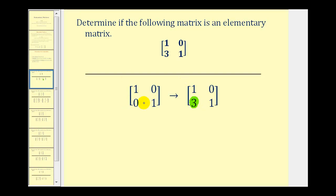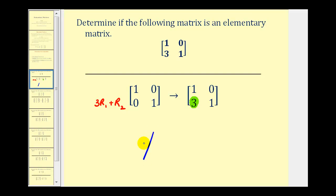If we were to replace row two with three times row one plus row two, notice how this would be three plus zero, which equals three. And this element here would be three times zero plus one, so it would still be one. Since we obtained this matrix by performing just one row operation on the identity matrix, the answer is yes — this is an elementary matrix.